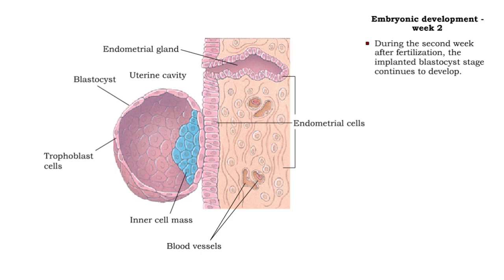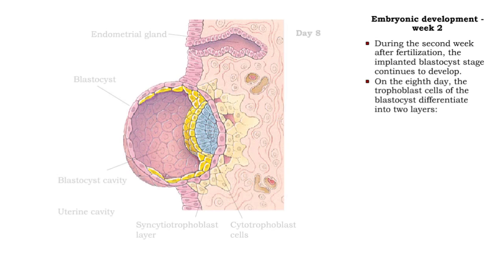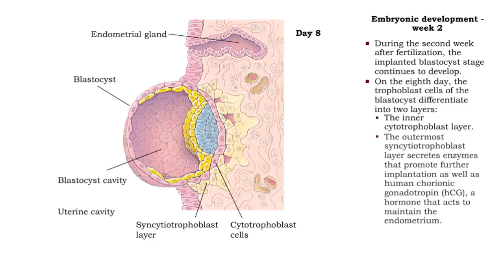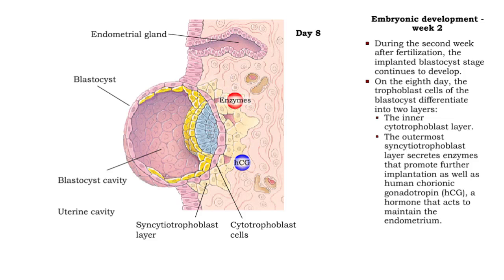During the second week after fertilization, the implanted blastocyst stage continues to develop. On the eighth day, the trophoblast of the blastocyst differentiates into two layers. The inner one is the cytotrophoblast layer. The outermost layer, called the syncytiotrophoblast, secretes enzymes that promote further implantation.